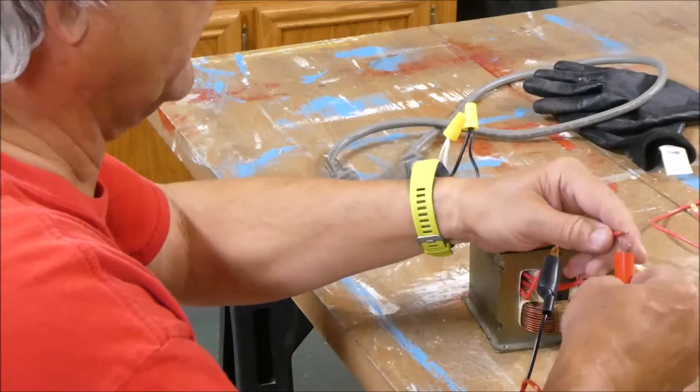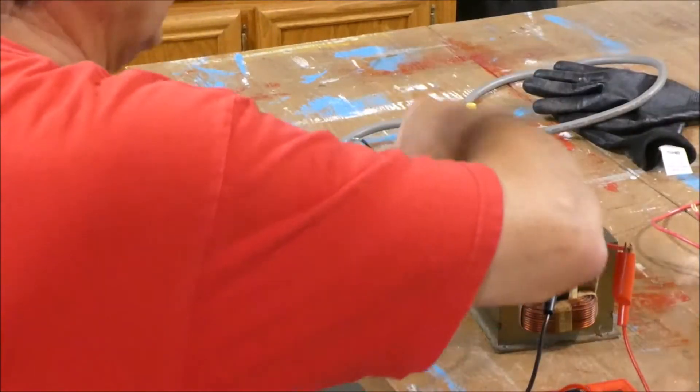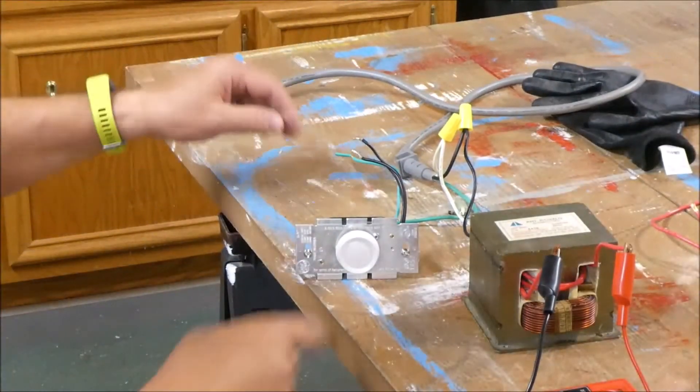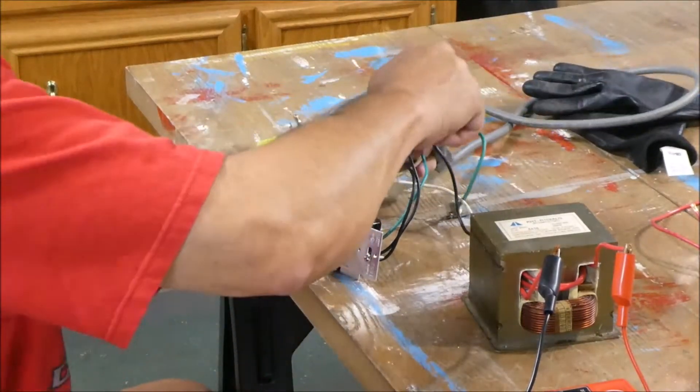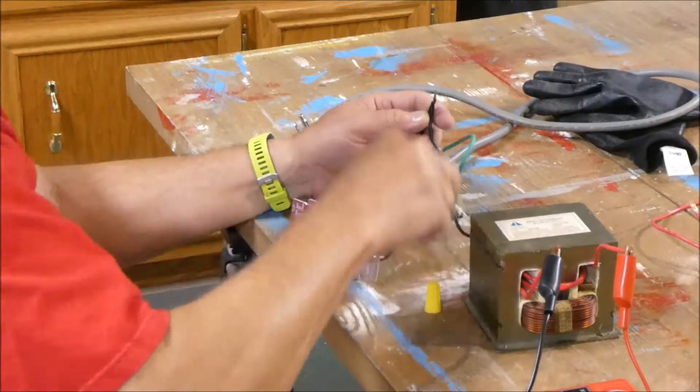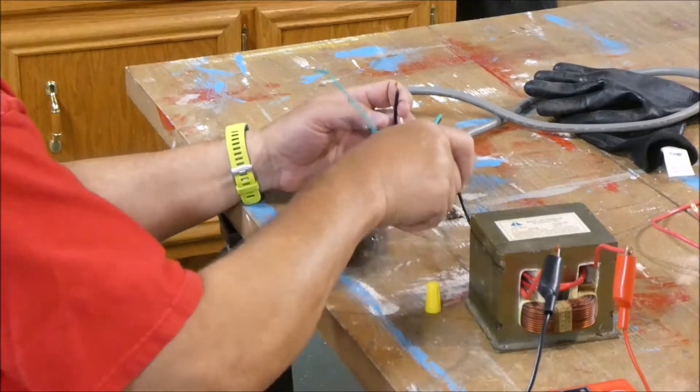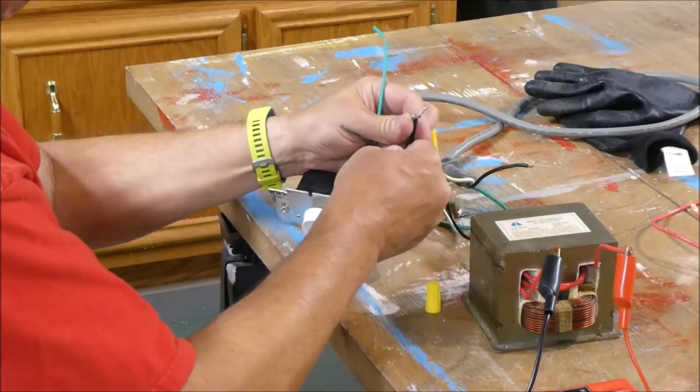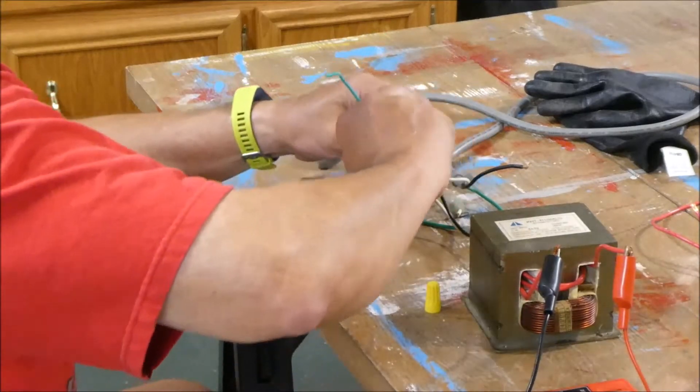Now, put this on here. We're going to wire in our dimmer switch.